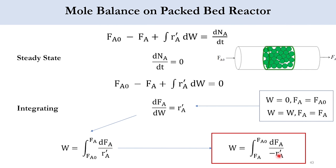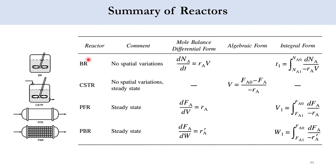In summary: the batch reactor is spatially uniform but unsteady state; the CSTR is spatially uniform and steady state; the PFR is steady state but spatially non-uniform; and the PBR is also steady state but spatially non-uniform. The mole balance is represented in three forms — differential, algebraic, and integral. The CSTR equation is the only algebraic form: V equals FA0 minus FA over minus RA. The batch reactor equation is in terms of time, the PFR in terms of volume, and the PBR in terms of weight of catalyst. This concludes chapter one of Elements of Chemical Reaction Engineering by H. Scott Fogler, fifth edition. In the next lecture we will start chapter two, covering conversion and design equations for these four industrial reactors.